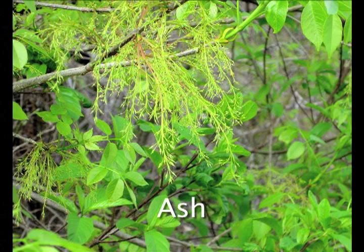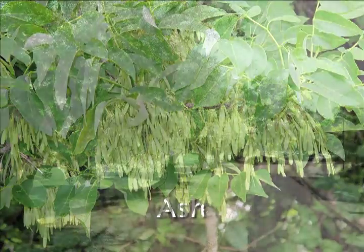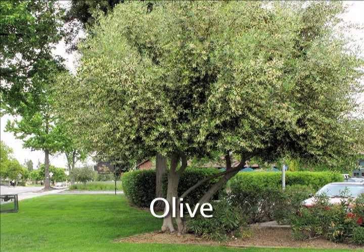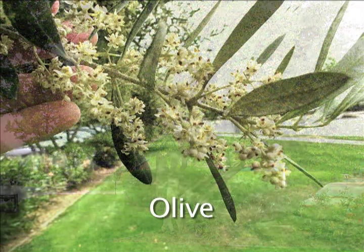Female ash trees produce long flowers that mature into ash seeds. Olive pollen is one of the most important aeroallergens in California and other parts of the west. Olive is also a significant allergen in Spain, Italy, and the entire Mediterranean region.